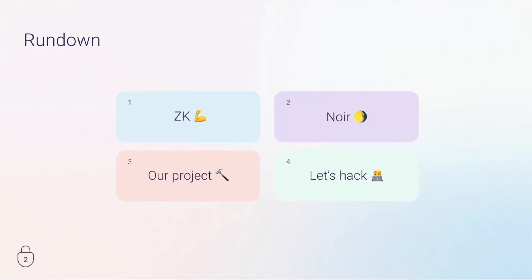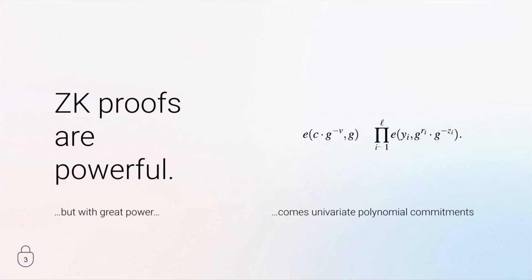We know that zero-knowledge proofs are really powerful — you can do stuff that you can't do with any other tech. But usually with great power come univariate polynomial commitments, and this is kind of the problem: if you don't get the math behind ZK, you're usually just left in the dark. The purpose of Noir is to make this go away and abstract all the complexities from the mathematical part of the ZK space. We need a usable, universal ZK domain-specific language. And yeah, we like Rust — Rust is cool.